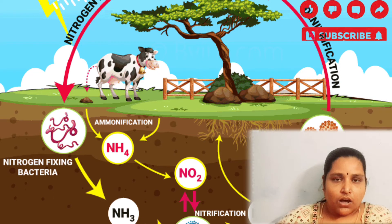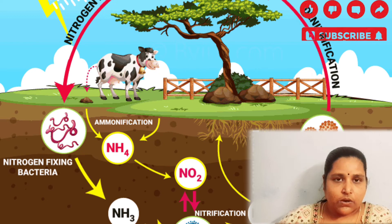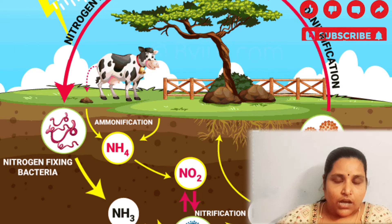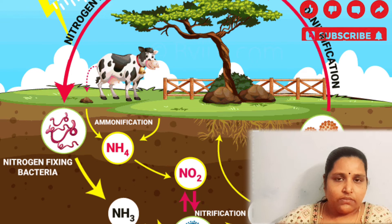Whenever the oxygen level in the atmosphere decreases, the ozone layer dissociates and maintains the level of oxygen in the atmosphere. Due to this there is rupture of the ozone layer. We can say this is how the carbon dioxide and oxygen cycle is maintained in the atmosphere — when the ozone layer is converted into oxygen.